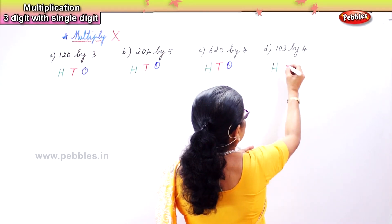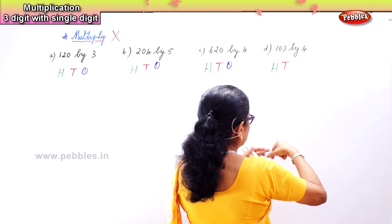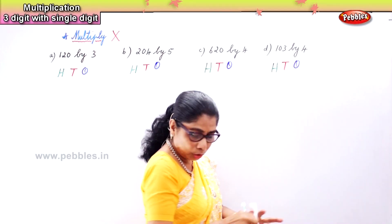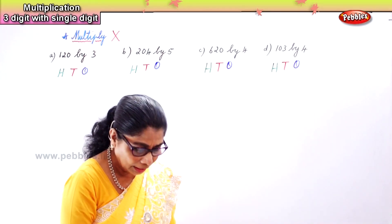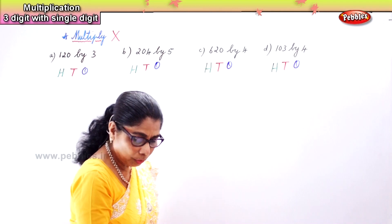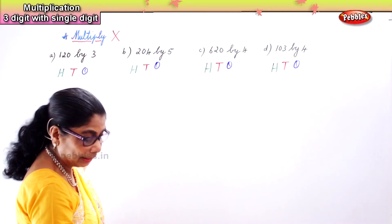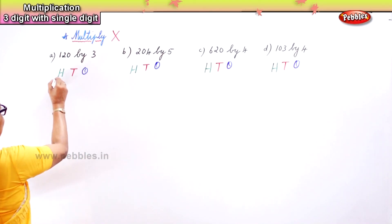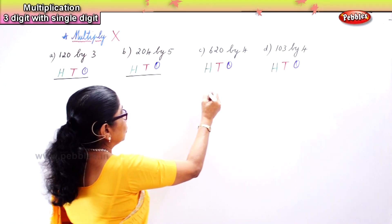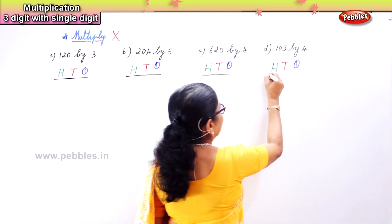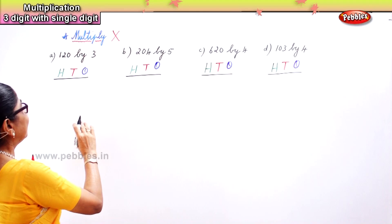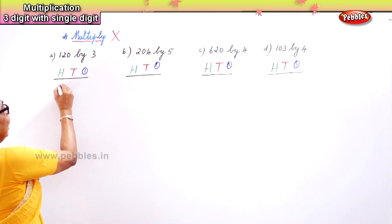So first you must write the place value so that we do not make a mistake. Then we go on placing the numbers correctly — we have the hundreds, tens, ones place value set up. Now we put the numbers down correctly.